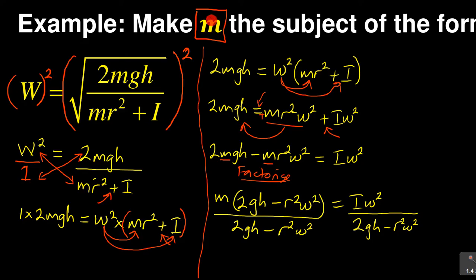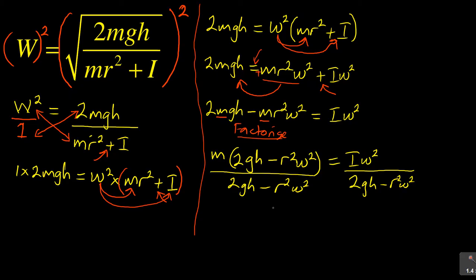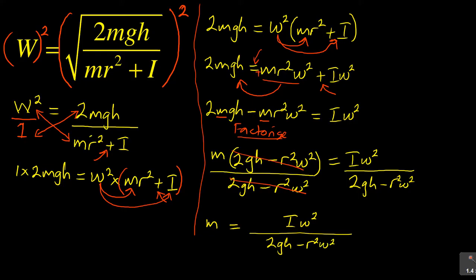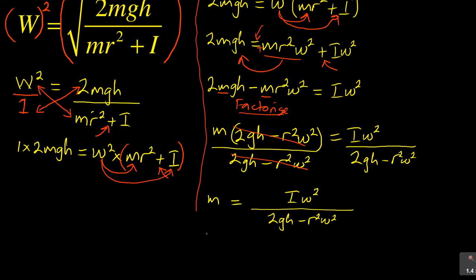Don't forget — the reason we're doing all of this is to make m the subject of the formula. After dividing both sides by (2gh minus r²w²), the bracket cancels on the left, and your final answer becomes: m equals Iw² all over (2gh minus r²w²). You have now successfully made m the subject of the formula.